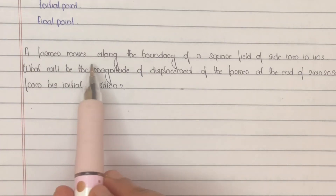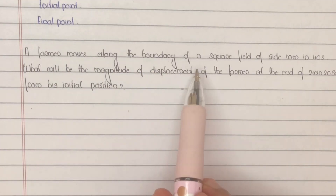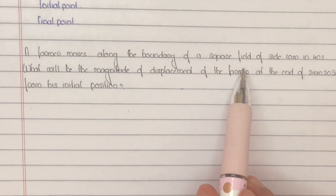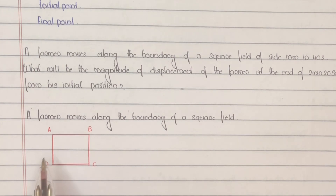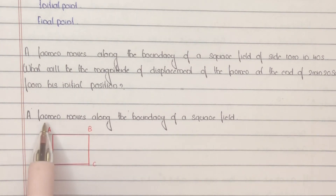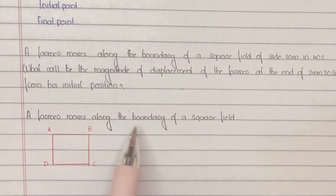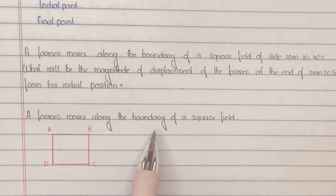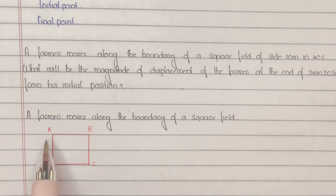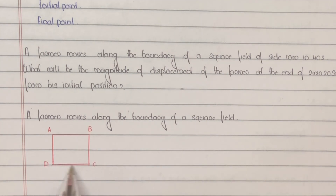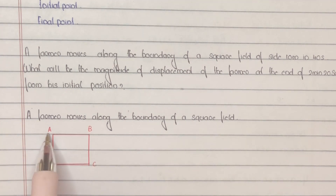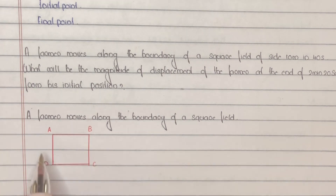A farmer moves along the boundary of a square field ABCD. The farmer moves along the boundary, so the path followed will be A, B, C, D, A — one round complete.